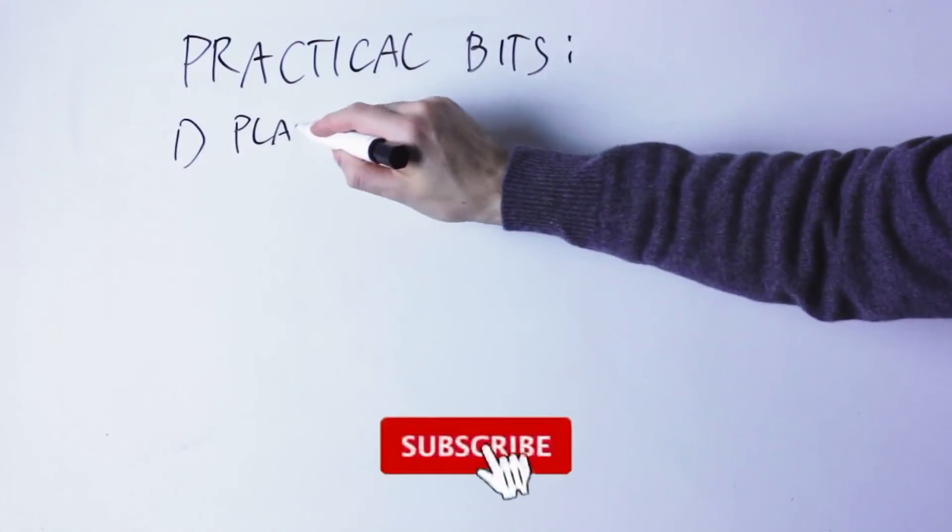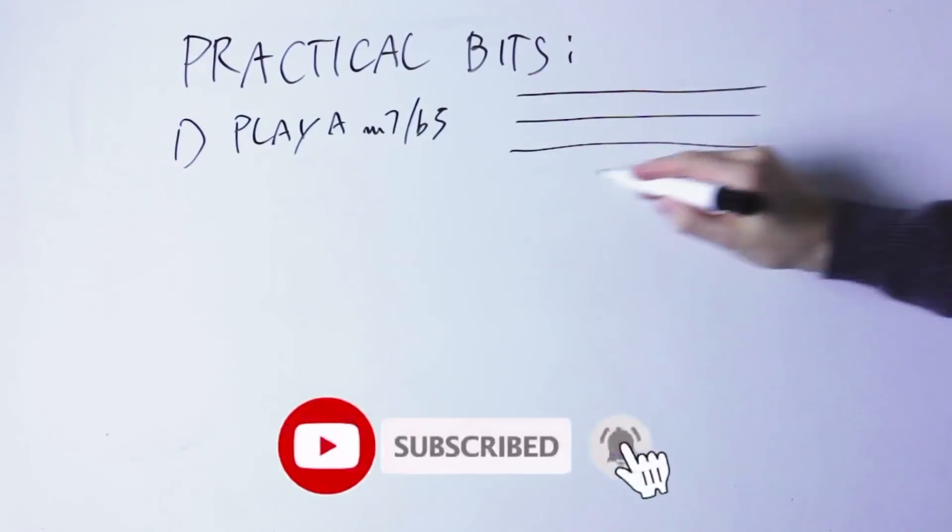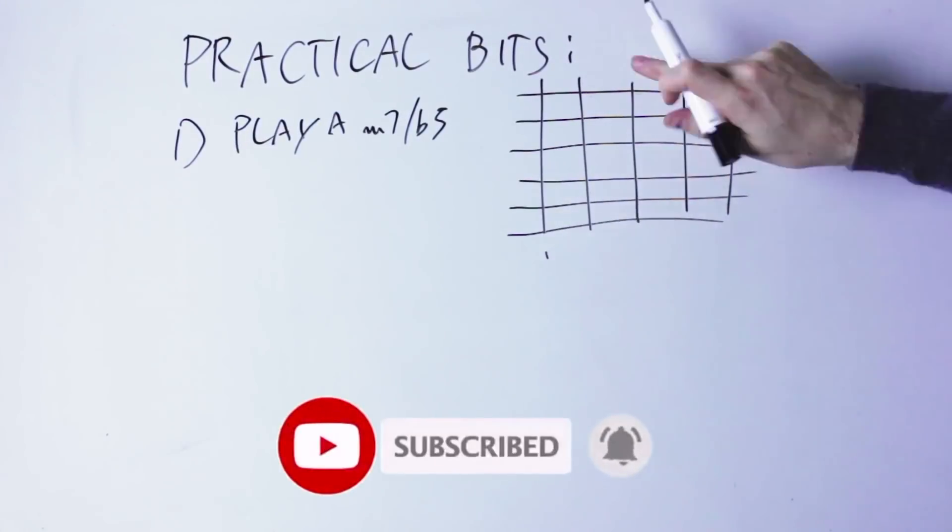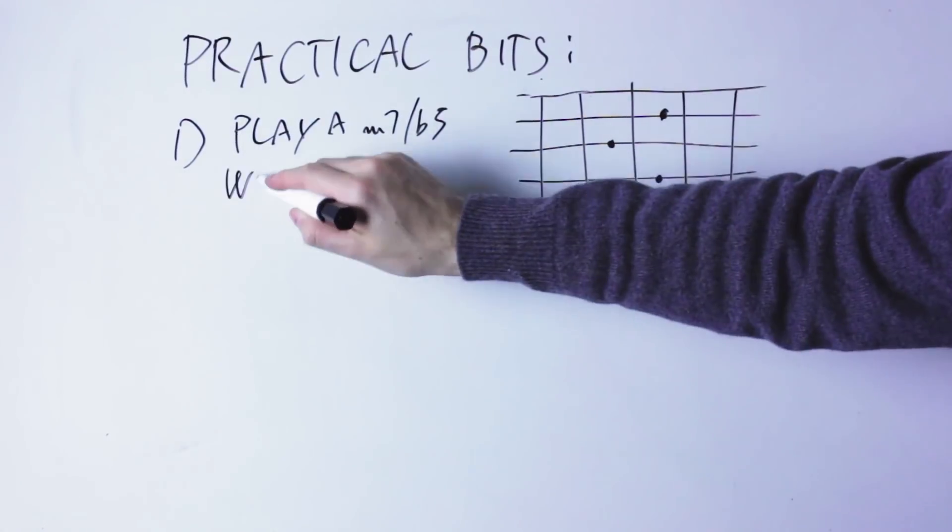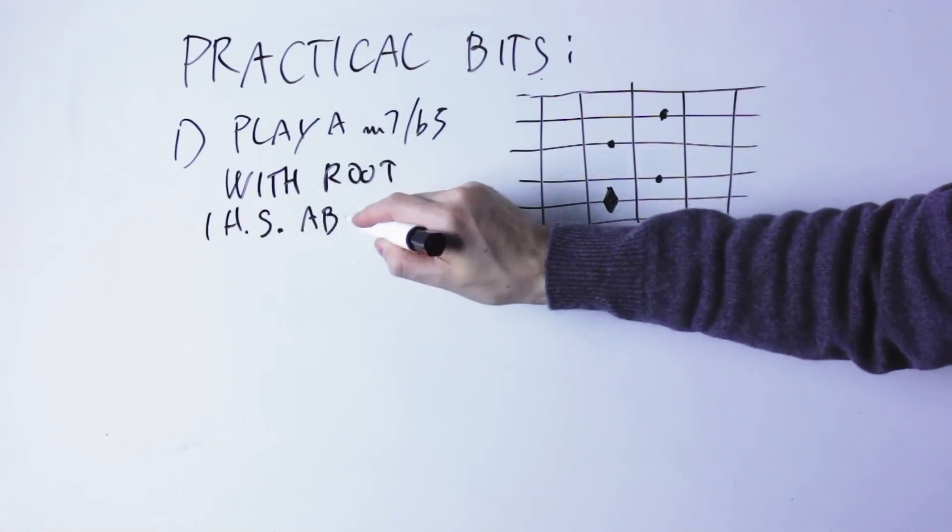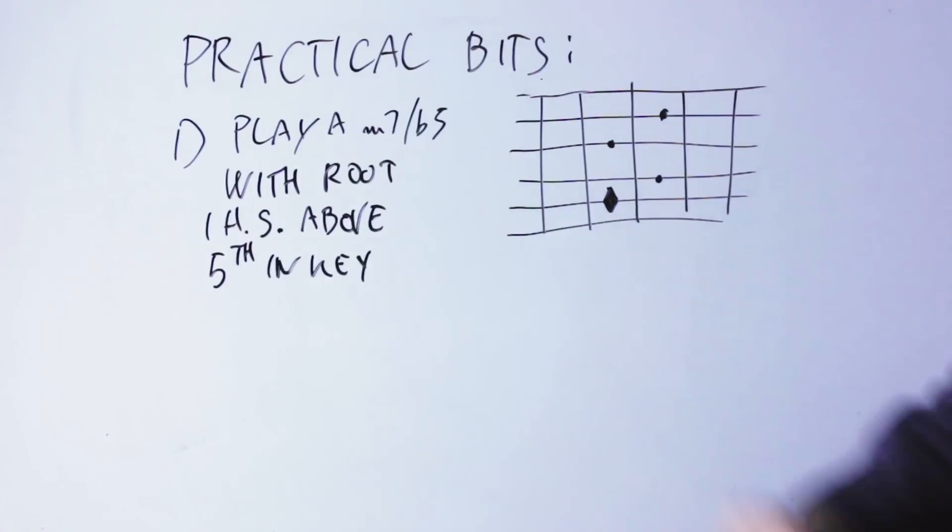First of all, how do you play it? You simply play a minor 7 flat 5 chord with the root a half step above the fifth degree of the key. You can use this chord in both major key or the minor key, though it's more commonly used in minor keys.